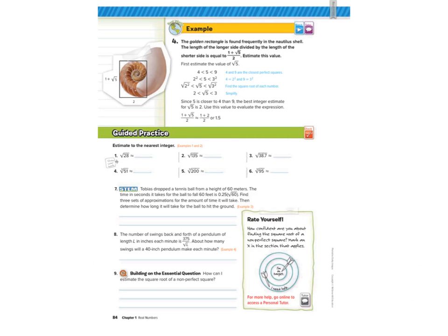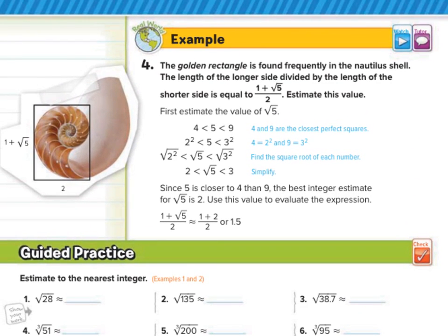Our last guided example deals with the golden rectangle. The golden rectangle is found frequently in the Nautilus shell. The length of the longer side divided by the length of the shorter side is equal to 1 plus the square root of 5 divided by 2. Estimate the value. Well, first we'll estimate the value of the square root of 5. And as we do that, we get it to be 2. And again, if we just looked at our quick number line here, we look at 2 and 3. 2 is equal to the square root of 4. 3 is equal to the square root of 9. And what's closer? Well, the square root of 5 is closer to 2, which is how they came up with the 2. And so they put in 1 plus 2, which is 3, over 2 is 1.5. And that is it for this lesson on estimate roots. Good luck.